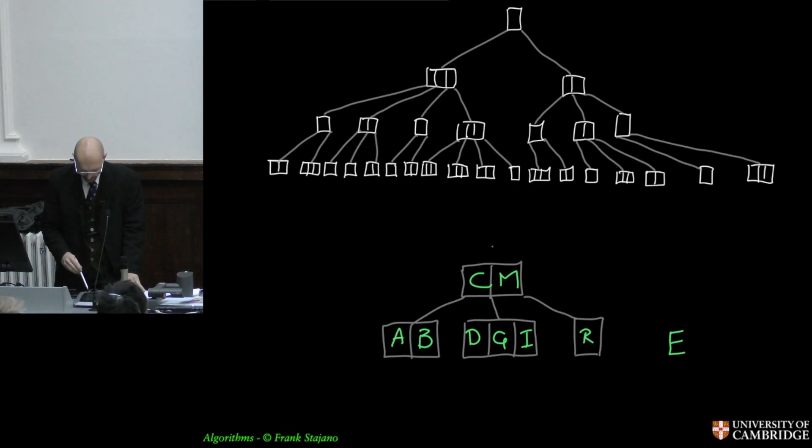Anyway, the 234 trees are trees that, as the name suggests, are not binary. The binary trees would be two trees in this terminology. So 234 refers to the number of children of each node. A node can have two children, like this, or it could have three children, like this, or it could have four children, like this. Each node of this same tree can be in one of these three cases: two, three, or four children.